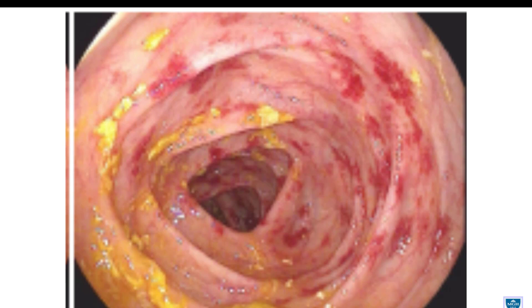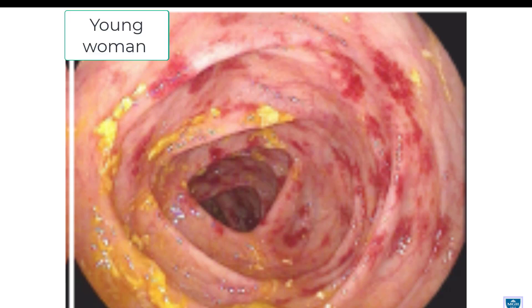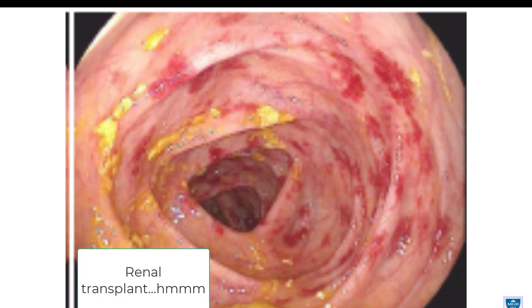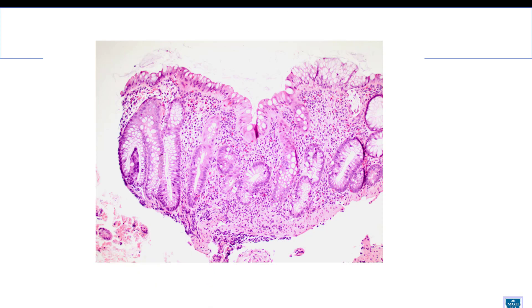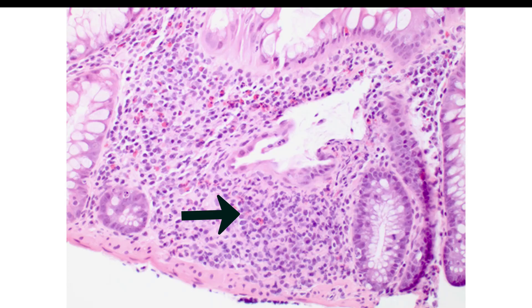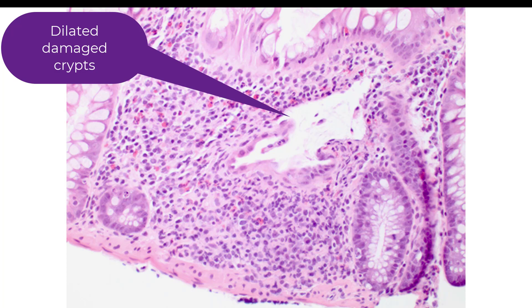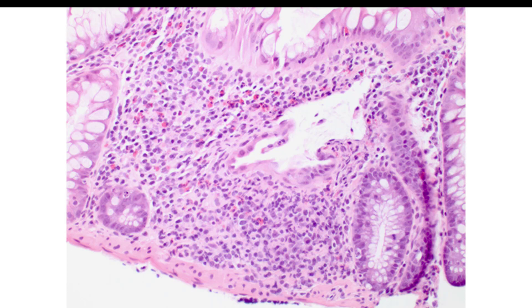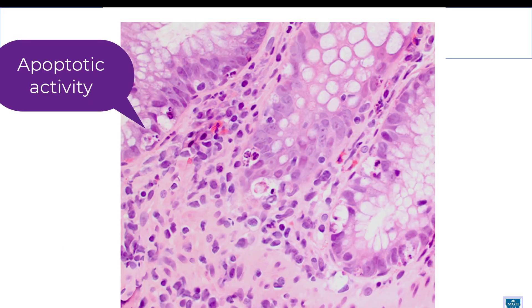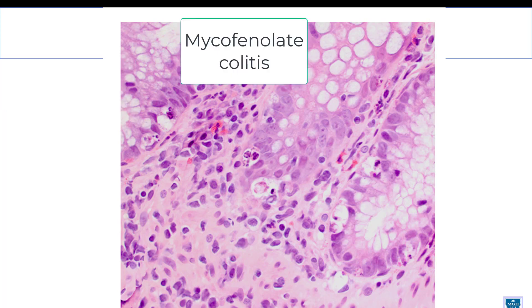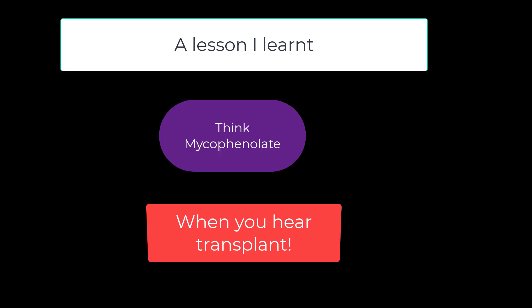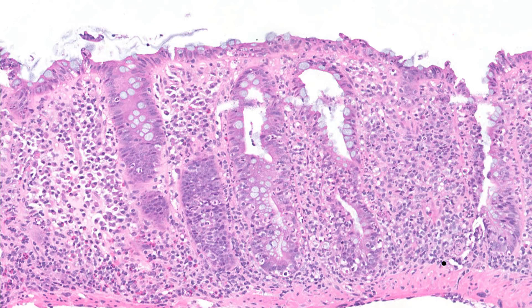Here's a young woman with diarrhea for about five weeks. You can see erosions on endoscopy. The hint was that she had received a renal transplant — something I did not pay attention to when I originally signed this out. On biopsy, there is some variation in crypt size and a few plasma cells trickling to the base, some basal plasmacytosis. But look at these crypts — they appear dilated and damaged. In addition, notice the increase in apoptotic activity. Those features — dilated damaged crypts with increased apoptosis — are very typical of mycophenolate mofetil-related colitis.